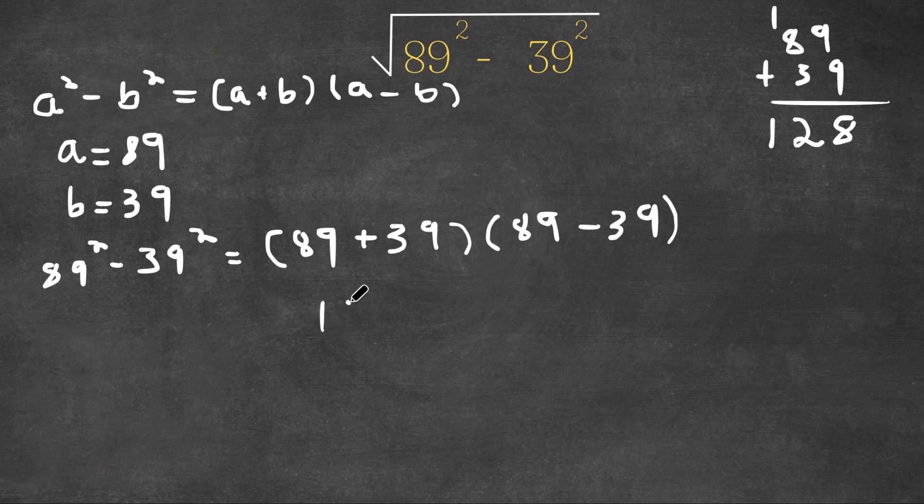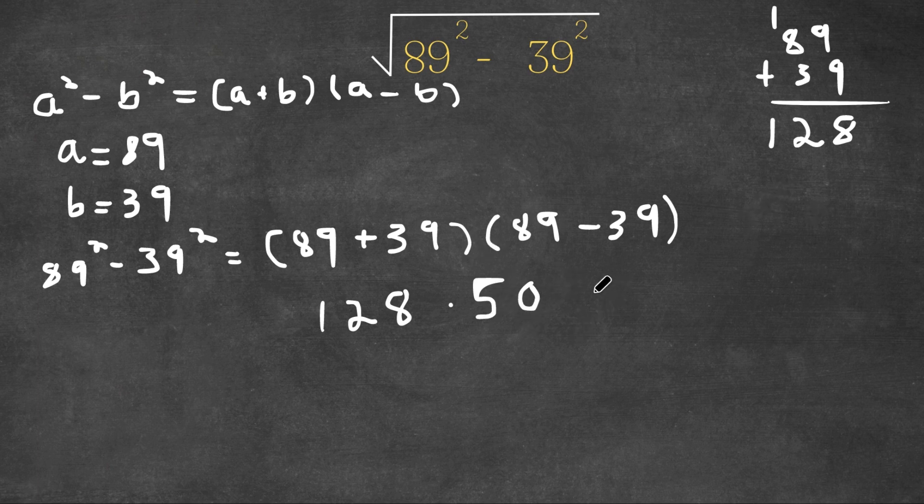So 89 plus 39 is 128. Now 89 minus 39 is simply just 50. So we have 128 times 50. Now let's first ignore the 0 because we could always add it later. Let's just do 128 times 5.